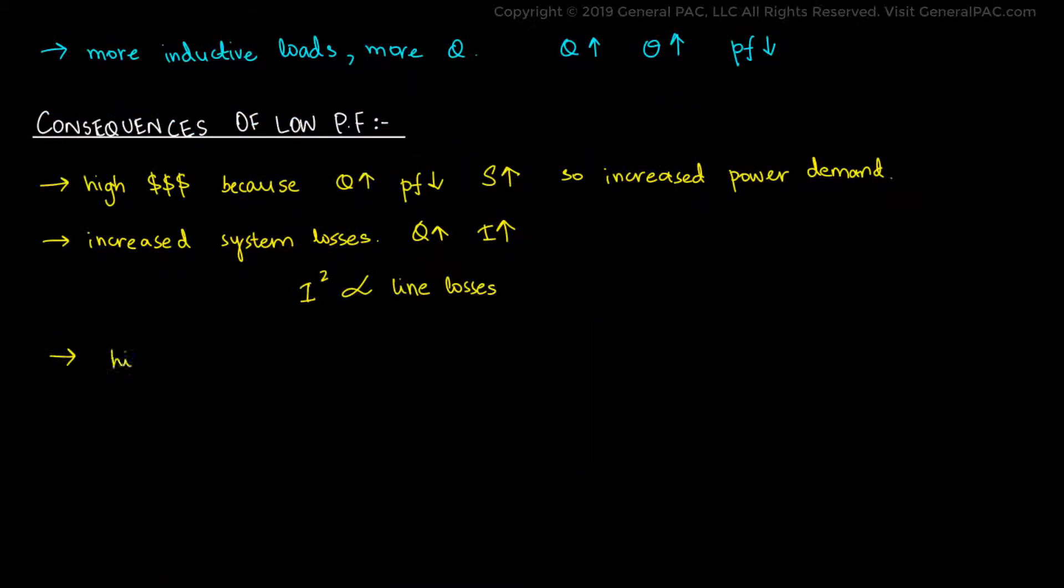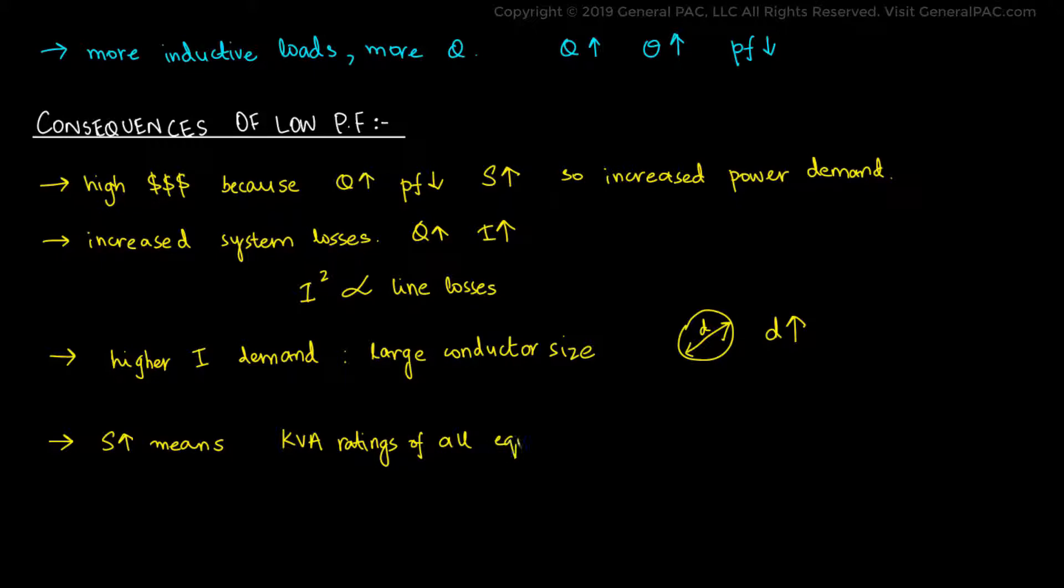In addition to that, the higher current demand would mean that a larger conductor size would be required to safely transmit power throughout the system. Furthermore, the increase in overall apparent power would mean that the KVA ratings of each equipment present in the facility would need to be increased as well. This adds unnecessary design costs to the system which can easily be avoided with a high power factor.